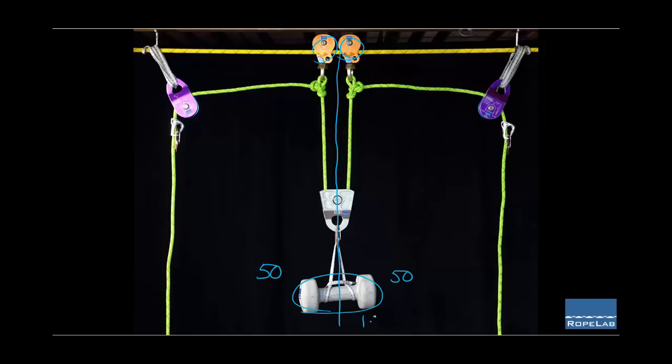Let's ignore units and just say that the total weight of the load is 100, so now I've got 50 hanging on this strand and 50 units hanging on this strand. That directly correlates to 50 straight off this anchor and 50 straight off this anchor.